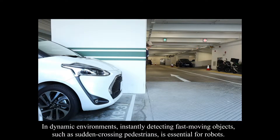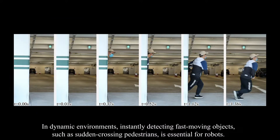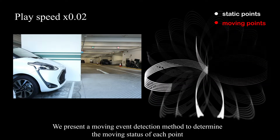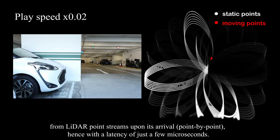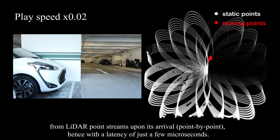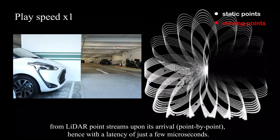In dynamic environments, instantly detecting fast-moving objects, such as sudden-crossing pedestrians, is essential for robots. We present a moving event detection method to determine the moving status of each point from LiDAR point streams upon its arrival, point by point, hence with a latency of just a few microseconds.